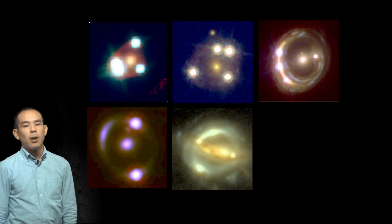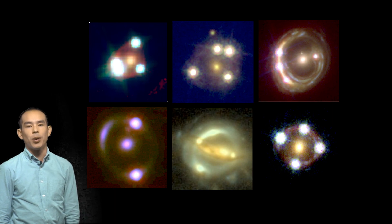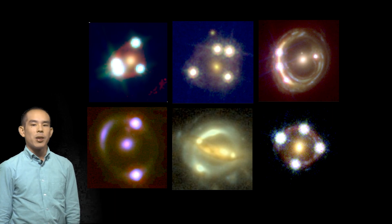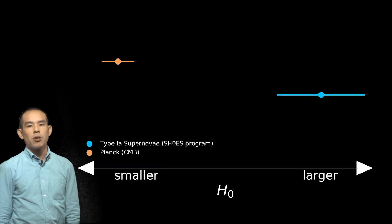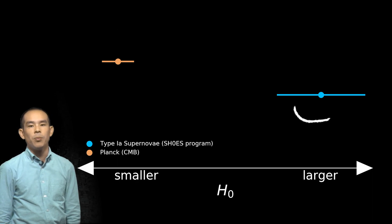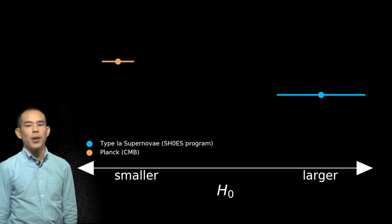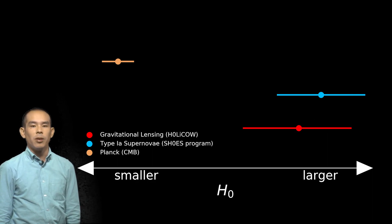We recently finished analyzing a total of six gravitational lenses. From these six, we've been able to measure the Hubble constant very precisely. We saw that the value of H0 calculated from the CMB was smaller than the value calculated from supernovae. Now, with HOLYCOW, we have an independent measurement of H0, and what we find is a result that is larger than the CMB value but agrees well with the supernova measurement.